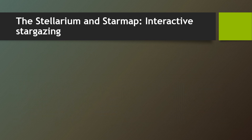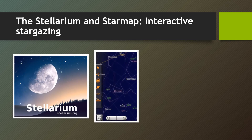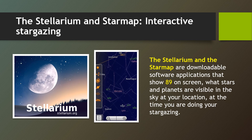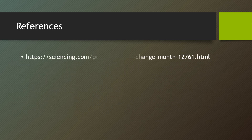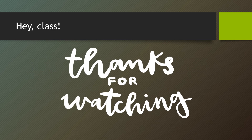We have two applications known as Stellarium and StarMap, which are interactive stargazing apps. Stellarium and StarMap are downloadable software applications that show 89 constellations on screen — what stars and planets are visible in the sky at your particular location at the time you are doing your stargazing. Here are the different references I made use of for my study. Thank you for watching.